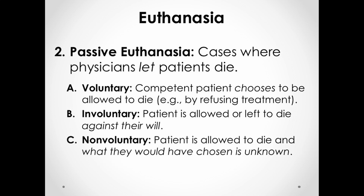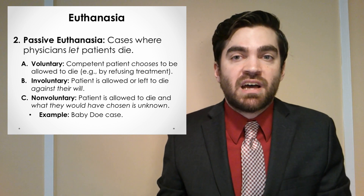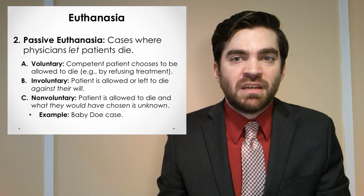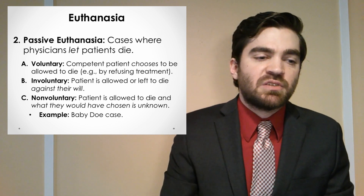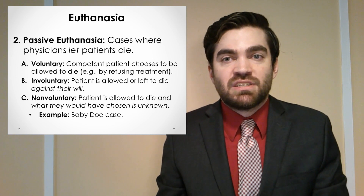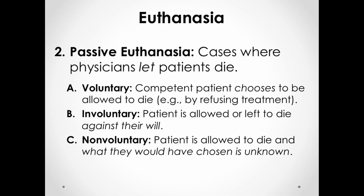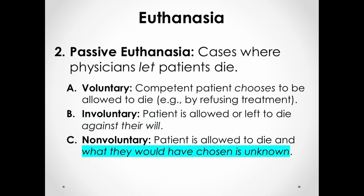Cases of non-voluntary passive euthanasia are where a patient is allowed to die but we don't know what they would have wanted. This is clearly what happened in the Baby Doe case. In that case, an infant was born with an esophageal problem, required surgery to fix it, and physicians just didn't step in — they allowed the infant to die. Because the patient was an infant, there's no way of knowing what the patient would have wanted. So it doesn't count as voluntary passive euthanasia, and the infant didn't choose the opposite either. We just don't know what they would have wanted, so it's non-voluntary.